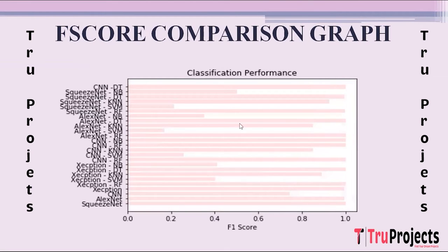This is the F-score comparison graph. In this graph, the x-axis shows F-scores and the y-axis shows algorithm names. F-score combines precision and recall into a single metric, balancing accuracy and completeness in predictions.